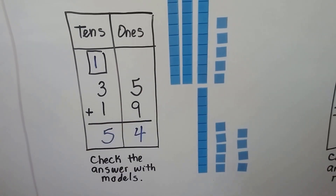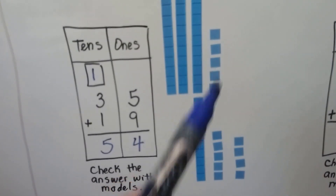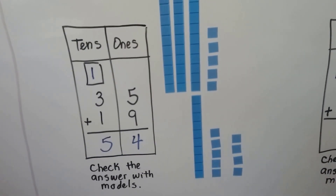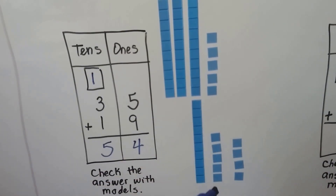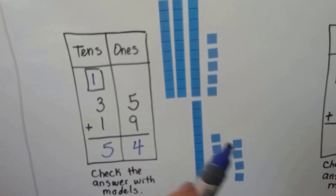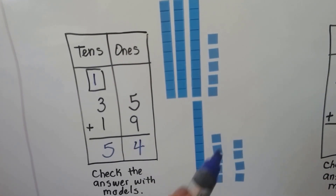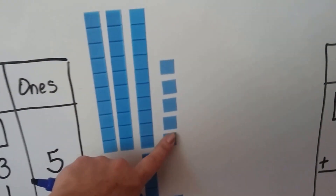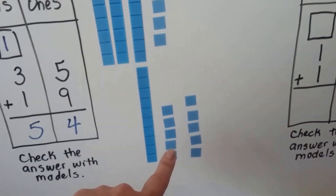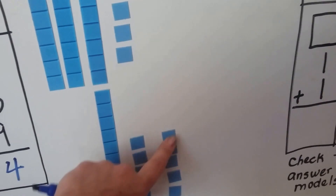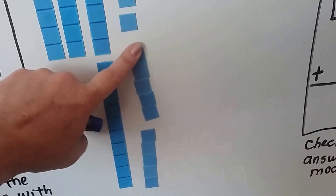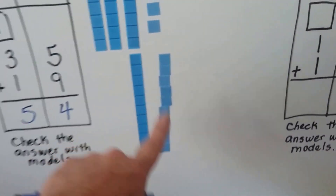We can check this with the models. 35 is 3 tens and 5 ones. 19 is 1 ten and 9 ones. We can make a group of 10. Now, if there's already 9 here because of the 19, we can just take one of these and put it here to make a 10. This 5 and this 5 together — if we move these together, that would make a 10.